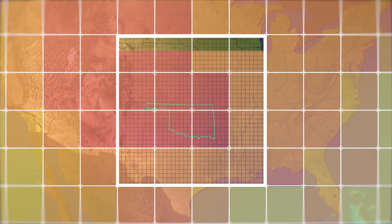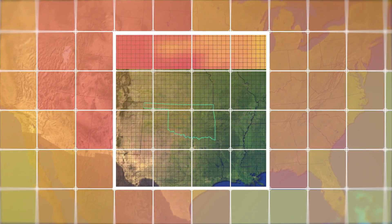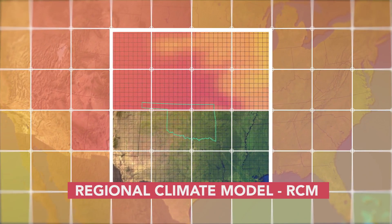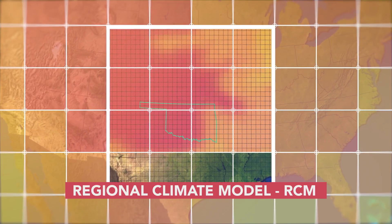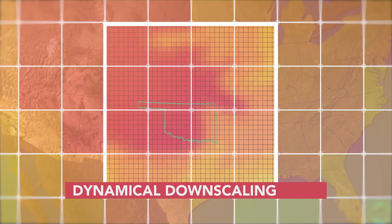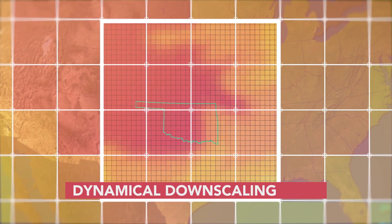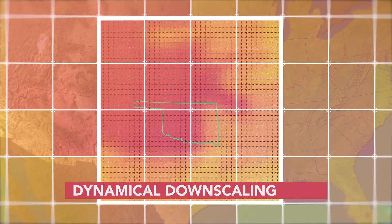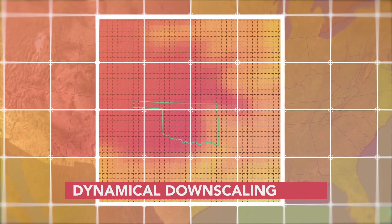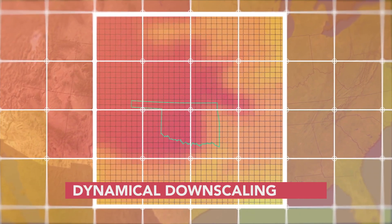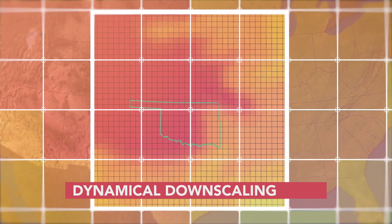The second approach generates finer scale information using regional climate models. This approach is known as dynamical downscaling, and it is less computationally intensive than the first one because it only models a small part of the globe, such as North America. Nonetheless, it still has high computational requirements that can make it impractical for practitioners with access to single workstations.